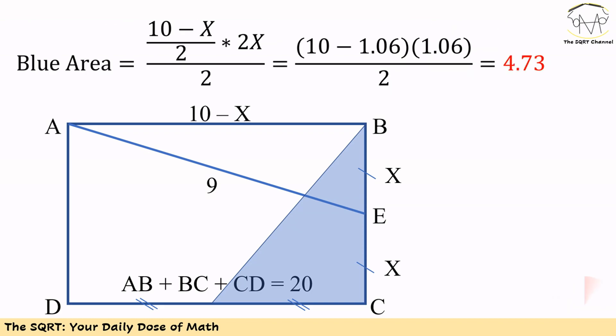Now we know the value of X. The blue area is equal to 2X times AB divided by 2 divided by 2. AB is equal to 10 minus X.